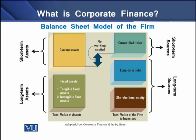To understand more about corporate finance, let's take an example of the balance sheet model of the firm. On the screen, you can see two different sides. The left side carries long-term assets and short-term assets. Short-term assets may include stock or inventories, receivables and cash, whereas the long-term assets may include both tangible and intangible assets.